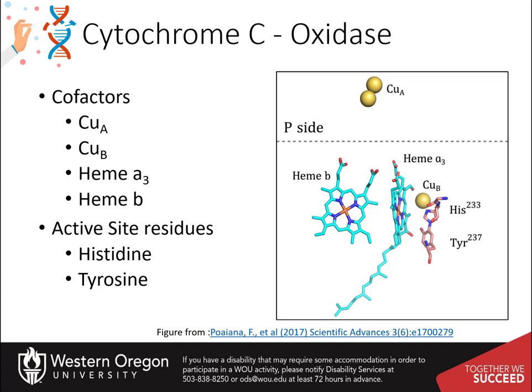Two heme groups — heme B and heme A3 — and two copper cofactors, copper A and copper B. Active site tyrosines and histidines are also important in the reaction mechanism.